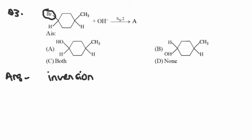OH is on top and H is on top, so your answer is B. The gist of this question is that inversion takes place in the SN2 mechanism. Thank you.